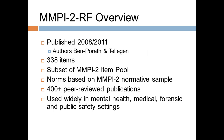The MMPI-2-RF, published in 2008 and revised very slightly in 2011, was authored by Yosef Ben-Porath and Auke Tellegen. It's 338 items, all of which are MMPI-2 items — this is a subset of the MMPI-2, and the norms are based on the MMPI-2 normative sample. The RF now has over 400 peer-reviewed publications, if you look at the RC scales and RF combined, and it's now used widely in all settings — mental health, medical, forensic, and so forth — that the MMPI-2 has a history of being used in.